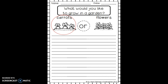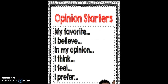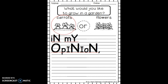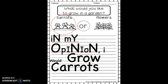For my sample I'm going to use the paper we did last week — 'What would you like to grow in a garden?' — and I've circled carrots. Now I'm ready to write my opinion. There are a few starter phrases to help us: 'My favorite,' 'I believe,' 'In my opinion,' 'I think,' 'I feel,' or 'I prefer.' I'm going to use 'In my opinion' as my starter, so I'll write: 'In my opinion, I would grow carrots.'